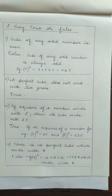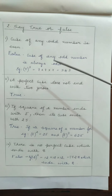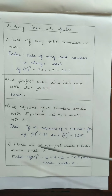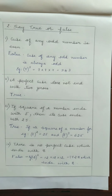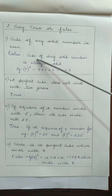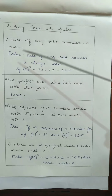Consider the first question: the given statement is 'Cube of any odd number is even.' For example, let us consider 7. We know that 7 is an odd number. So cube means 7 cube — 7 into 7 into 7 — we get the final answer equal to 343, which is a perfect cube. Children, whether 343 is an even number? It is not an even number. 343 is an odd number. Therefore the given statement is false.